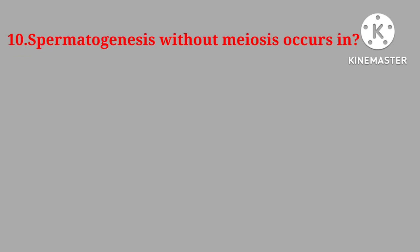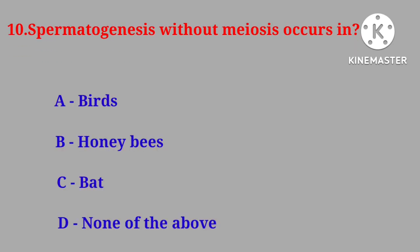Question No. 10: Spermatogenesis without meiosis occurs in: birds, honeybees, bat, or none of the above. Correct answer is honeybees.